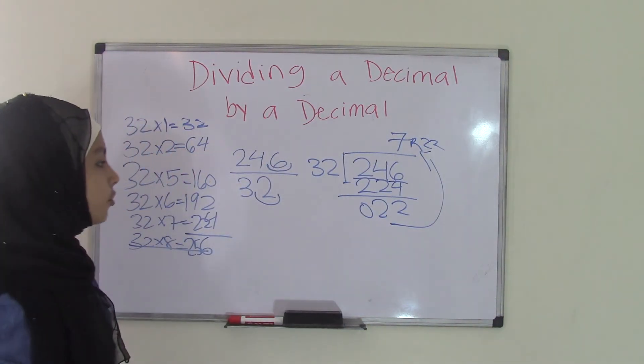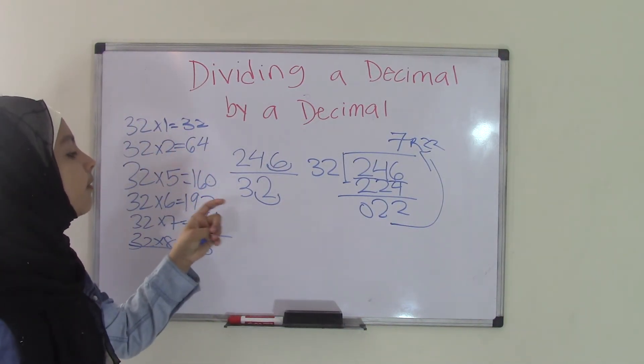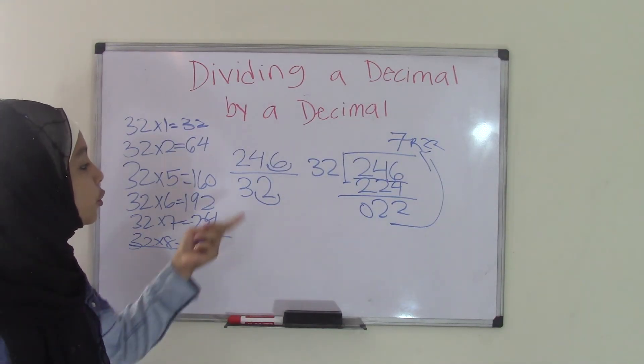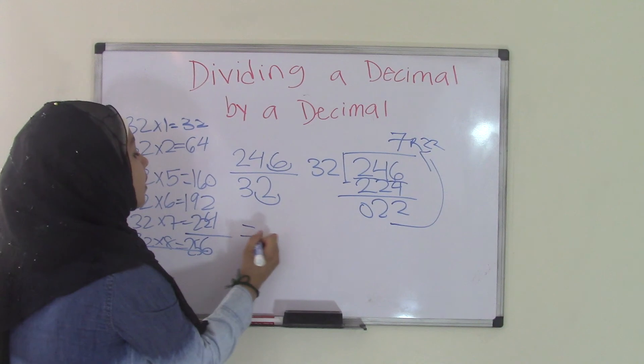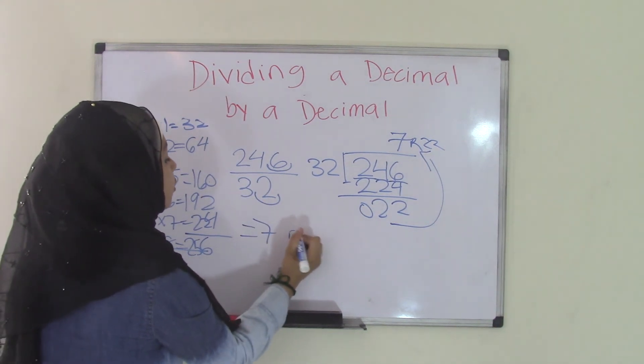That means the quotient of 246 divided by 32, or the original problem, which was 24.6 divided by 3.2, equals 7 remainder 22.